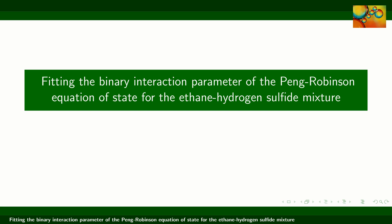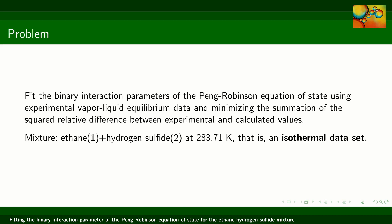In this video, we are going to show you how to use the XSCOS package to fit the binary interaction parameter of the Peng-Robinson equation of state. To do that, we will use experimental vapor-liquid equilibrium data for the mixture ethane and hydrogen sulfide measured at constant temperature.